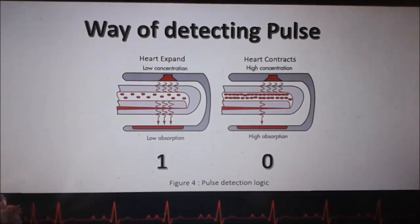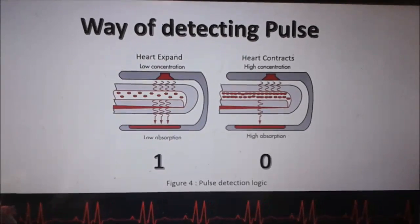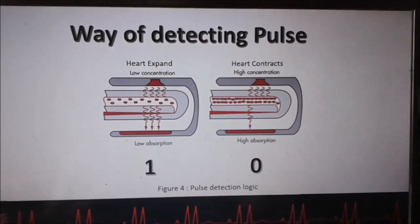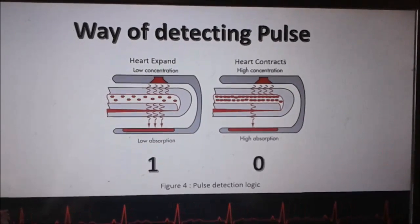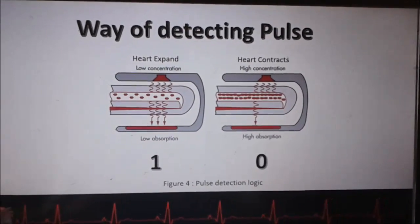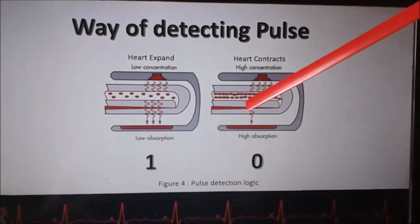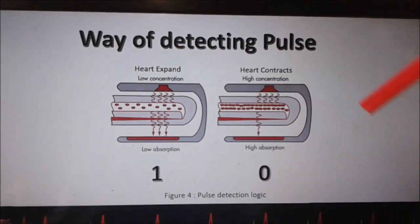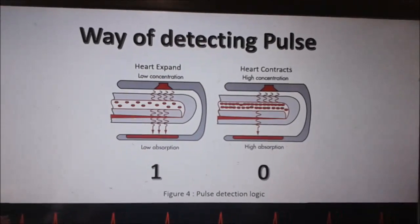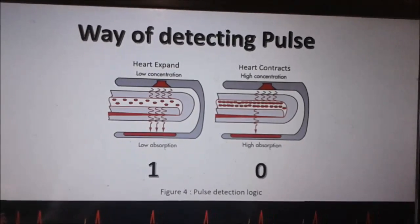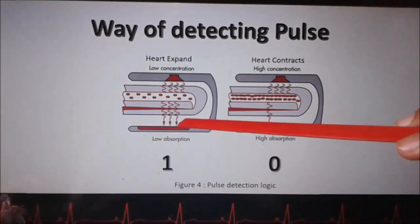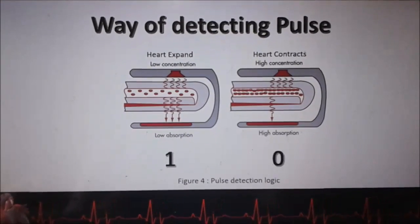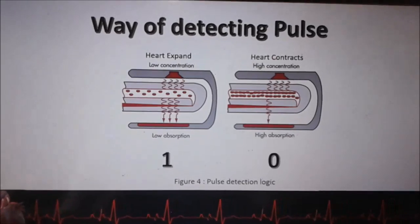The concept used is pulse oximetry logic. We place an infrared LED on one side and a photodiode on the other. When the heart contracts, RBC density in the capillaries is higher, so light does not pass through — we take that as zero. When the heart expands, RBC density is low and vessels become translucent, allowing light to pass — we take that as one.